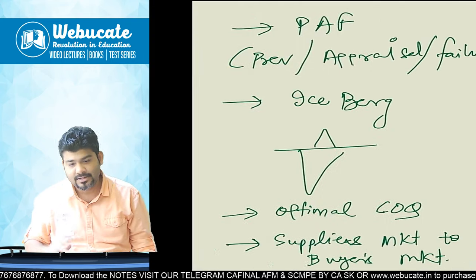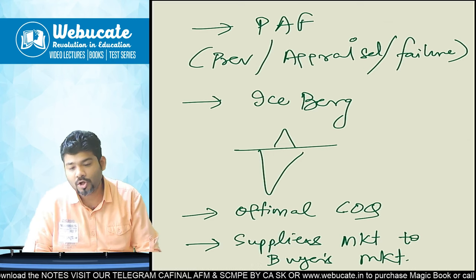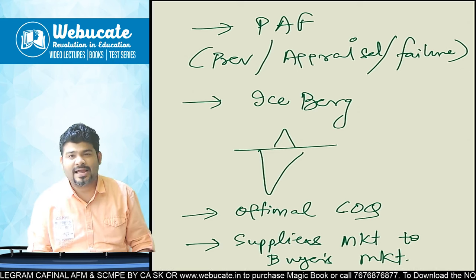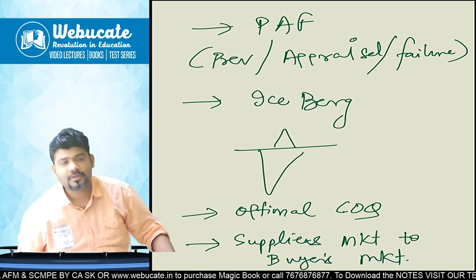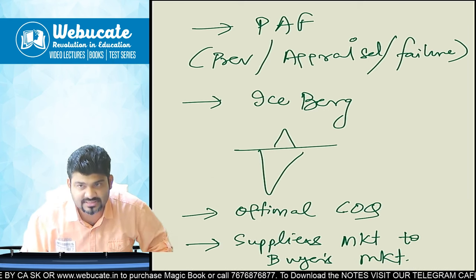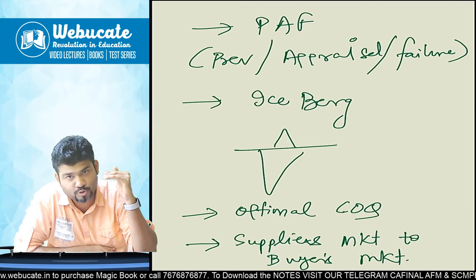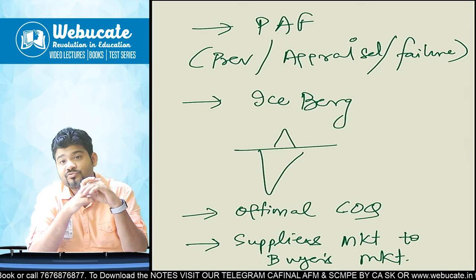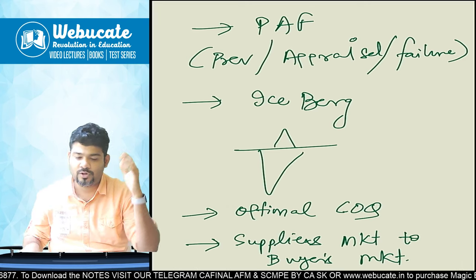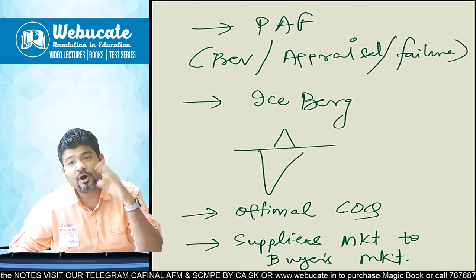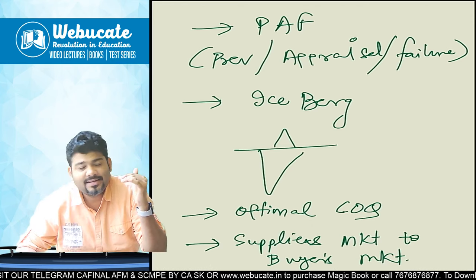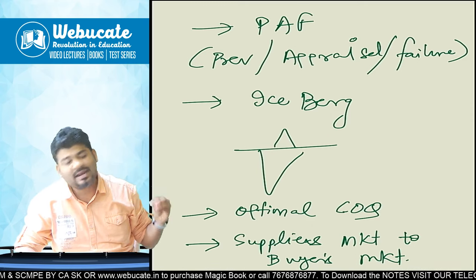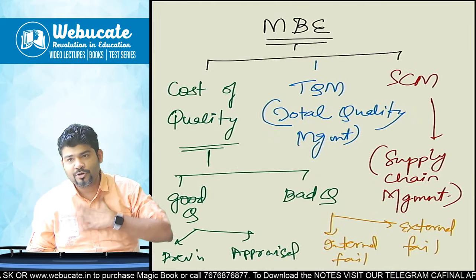The PAF model involves identifying failures into categories of prevention, appraisal, internal failure, and external failure, then allocating resources and evaluating performance regularly. The iceberg model tells us hidden quality costs must also be taken care of. The shift from suppliers' market to buyers' market happened especially on account of globalization and excess capacities in the market. That concludes yesterday's session recap.